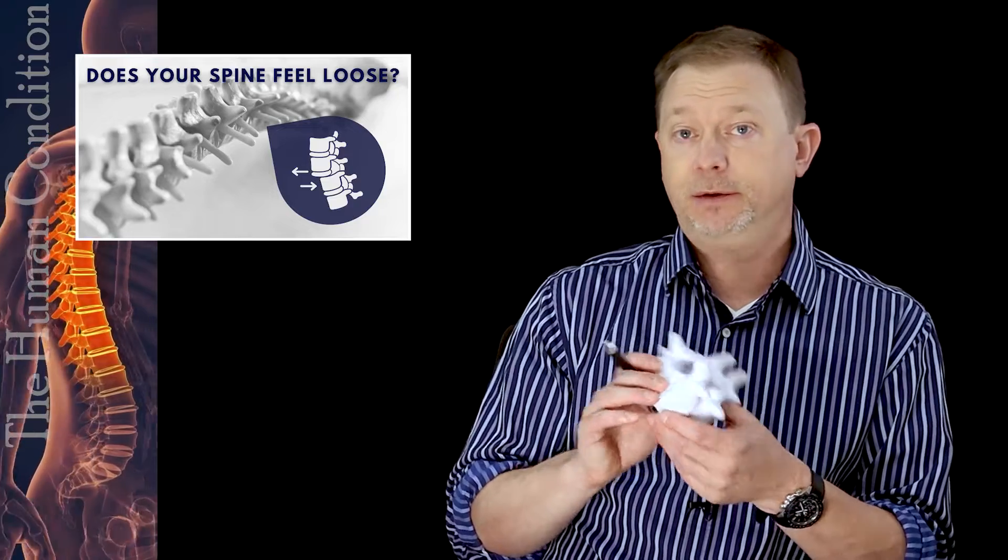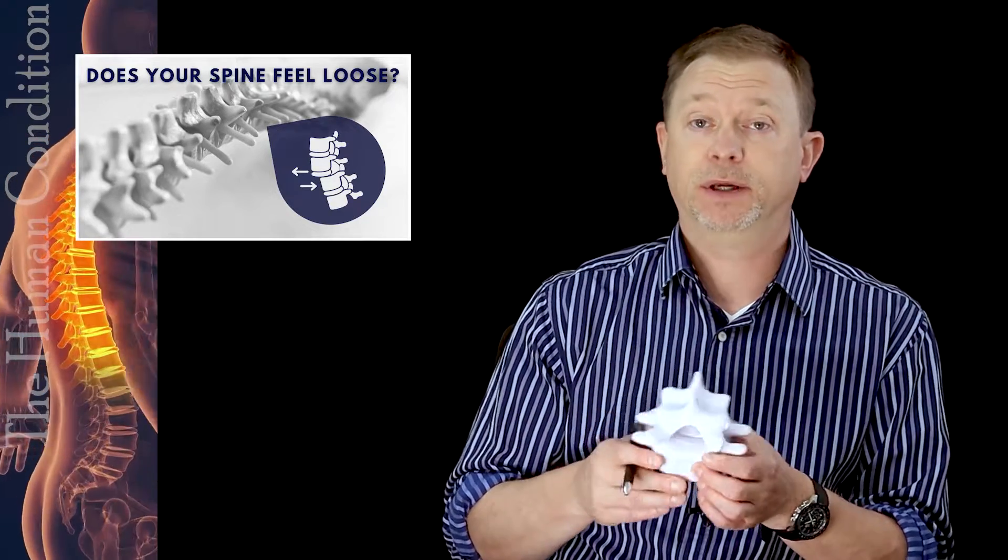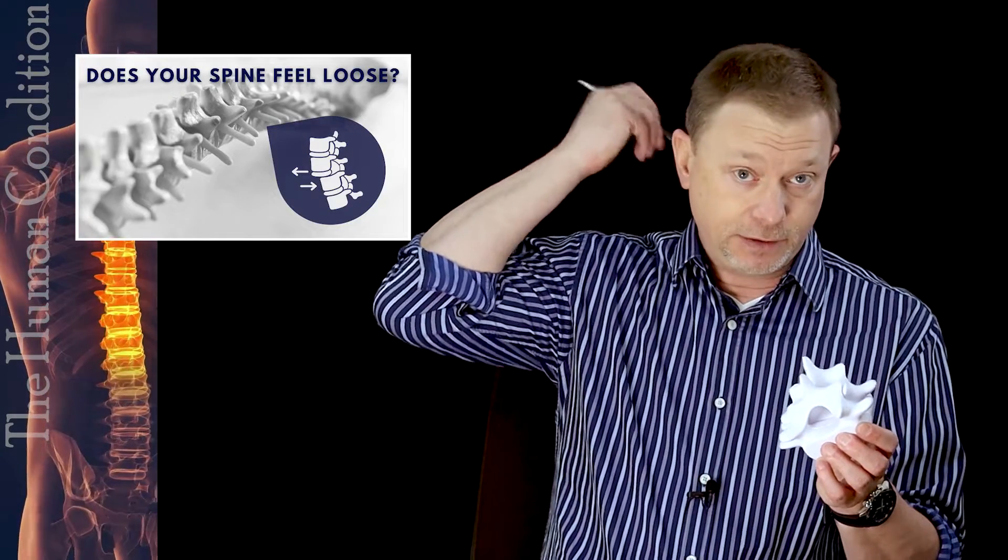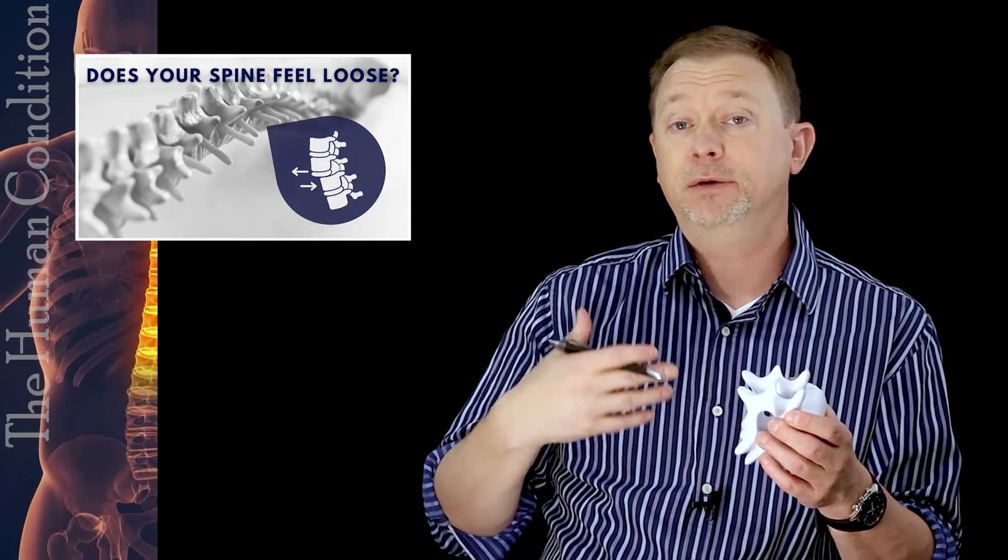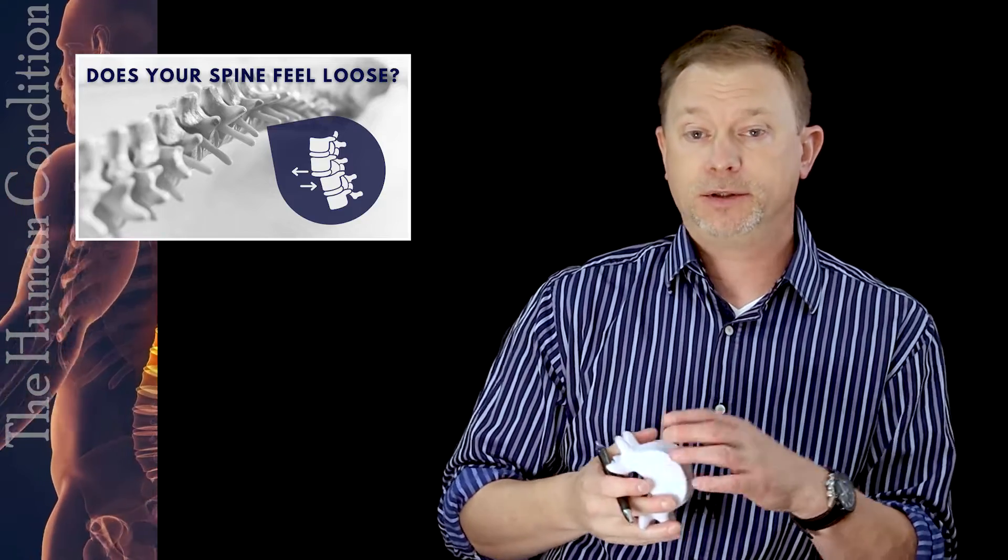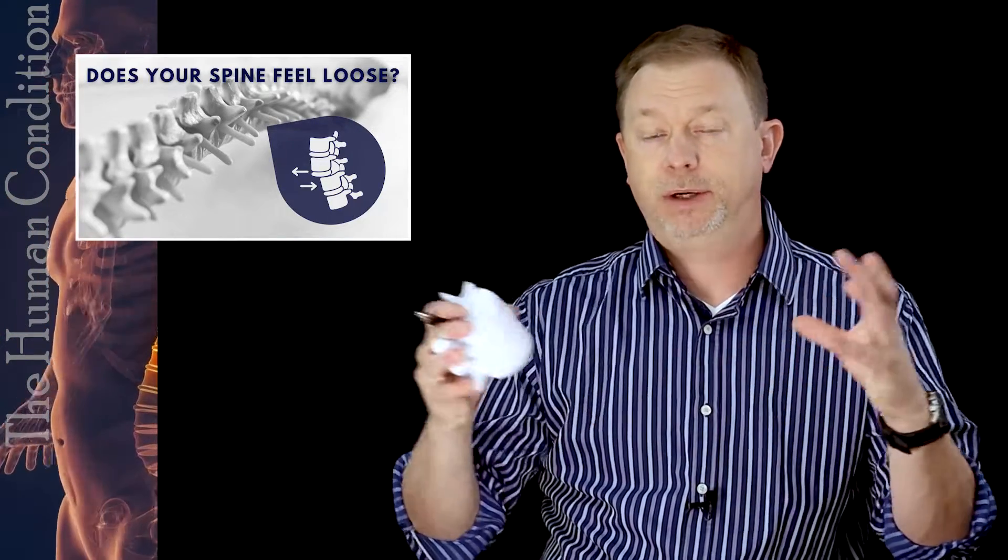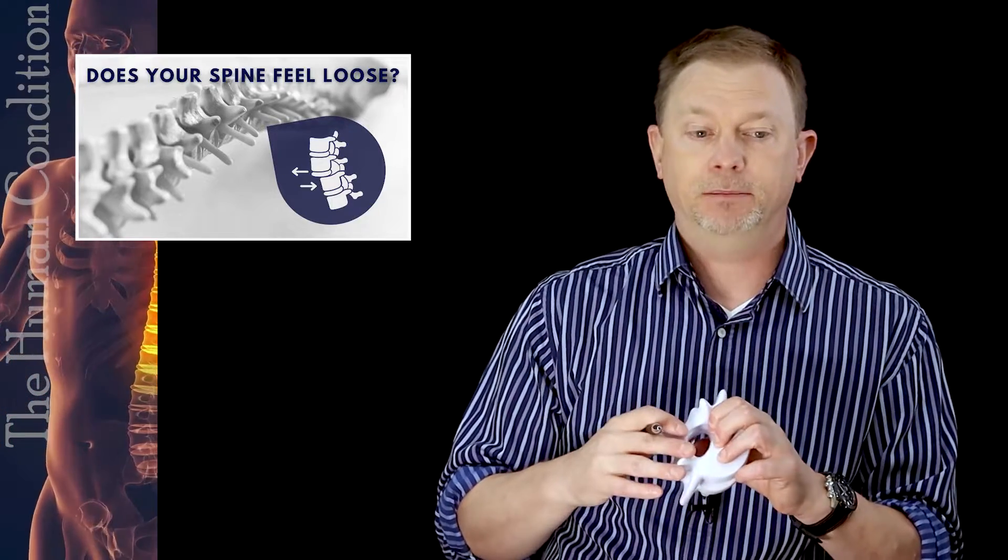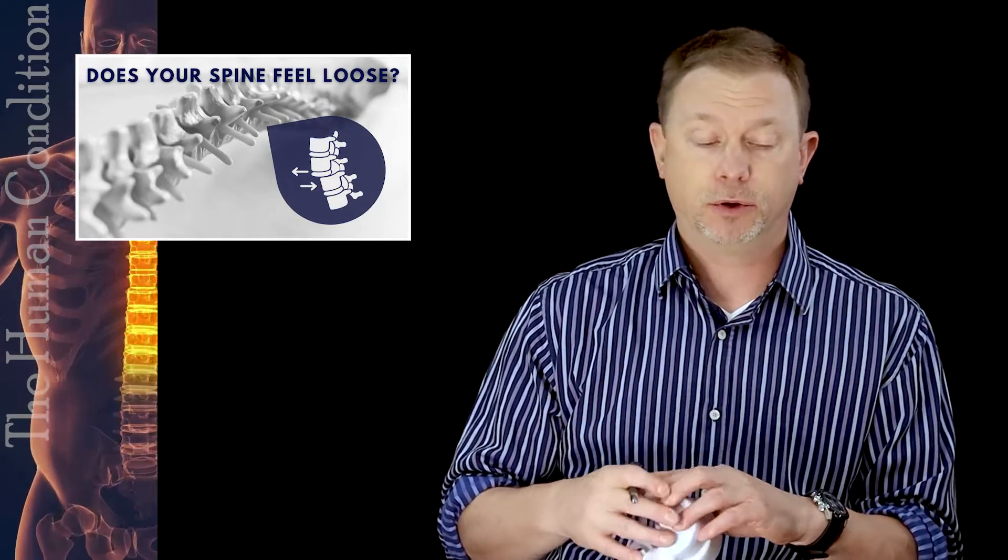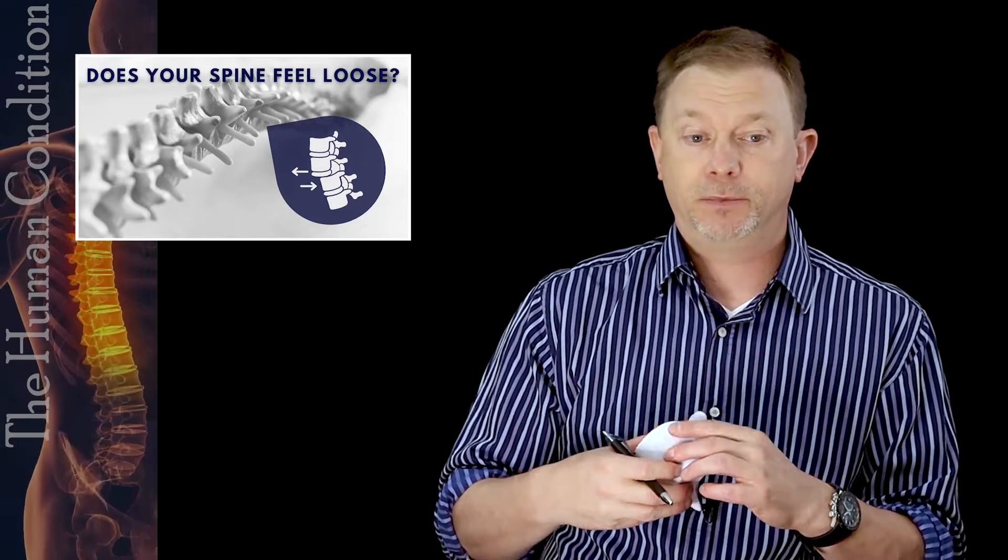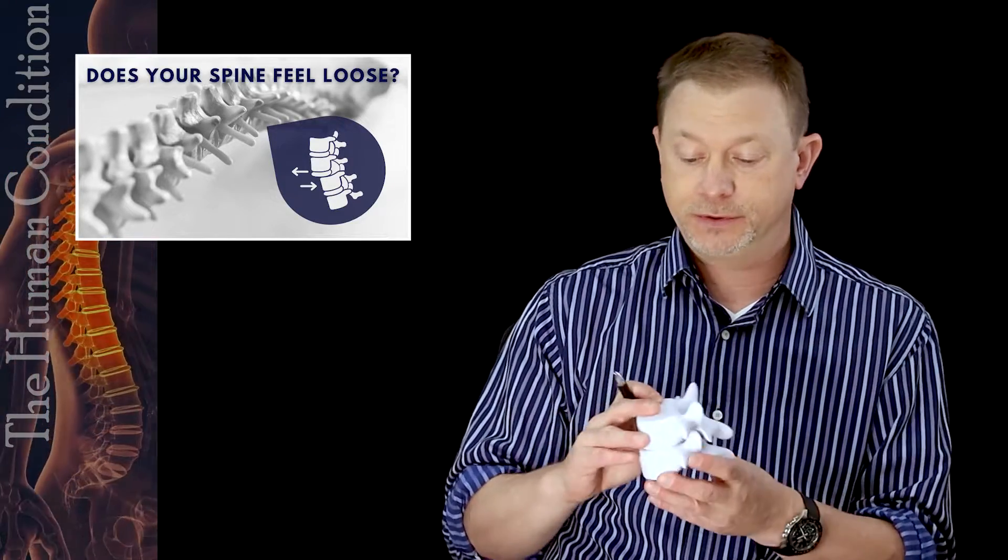Things like prolotherapy where they inject basically sugar water with tiny needles into the areas of ligaments and try to induce inflammation. They try to cause a little bit of irritation which causes repair molecules and repair cells to come to the site and solidify it, to make it grow stronger and deposit more collagen. That collagen strengthens those ligaments so that there isn't so much slop.